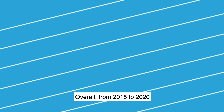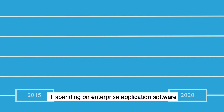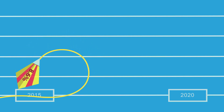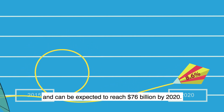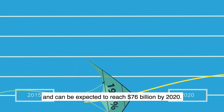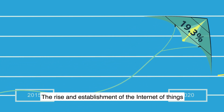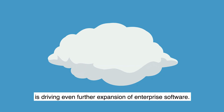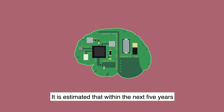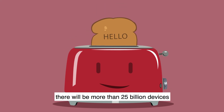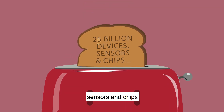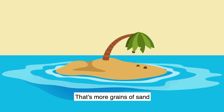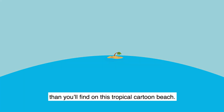Overall, from 2015 to 2020, IT spending on enterprise application software was projected to grow at an 8.6% rate. SaaS growth was projected at 19.3%, expected to reach $76 billion by 2020. The rise of the Internet of Things — IoT — is driving even further expansion of enterprise software. It is estimated that within the next five years there will be more than 25 billion devices, sensors, and chips handling upwards of 50 trillion gigabytes of data — more grains of sand than you'll find on a tropical cartoon beach.